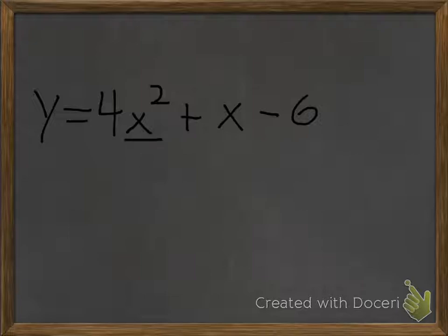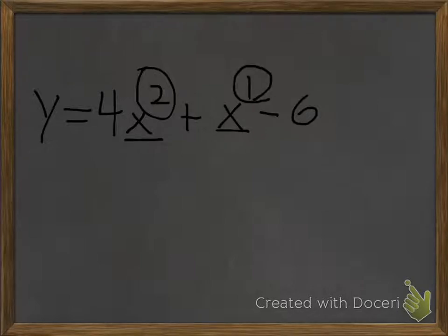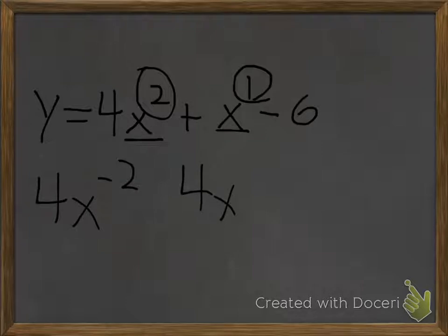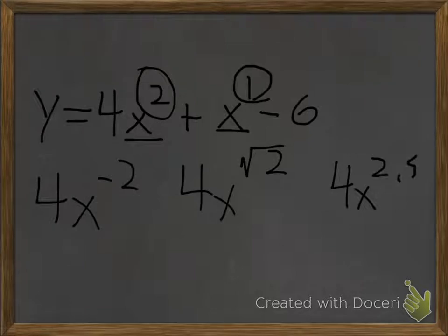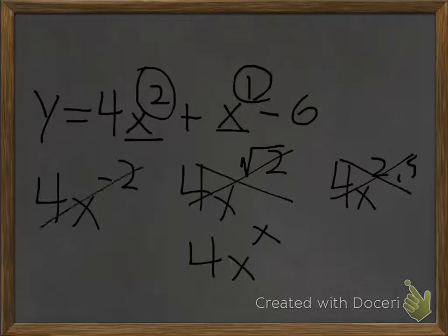When you have a polynomial function, you know it is one when your exponents of your variables are whole numbers. Remember, x is the same thing as x to the 1 power — it's always good to write that out. So you couldn't have something like 4x to the negative 2, 4x to the radical 2, 4x to the 2.5, or 4x to the x power, because none of these are whole number exponents. You will never see that in a polynomial function.